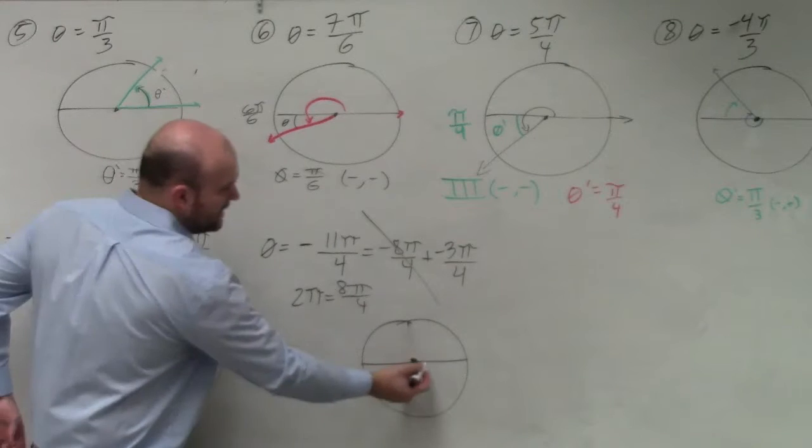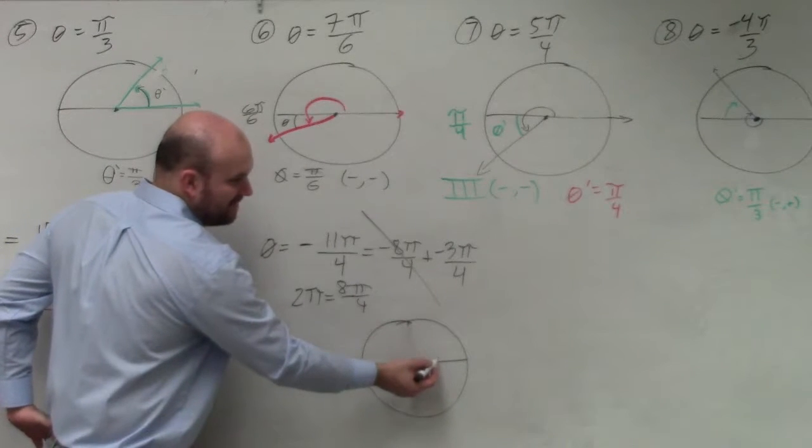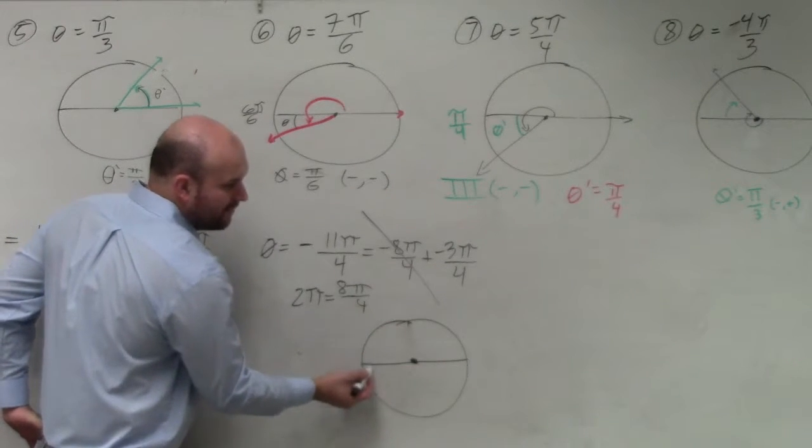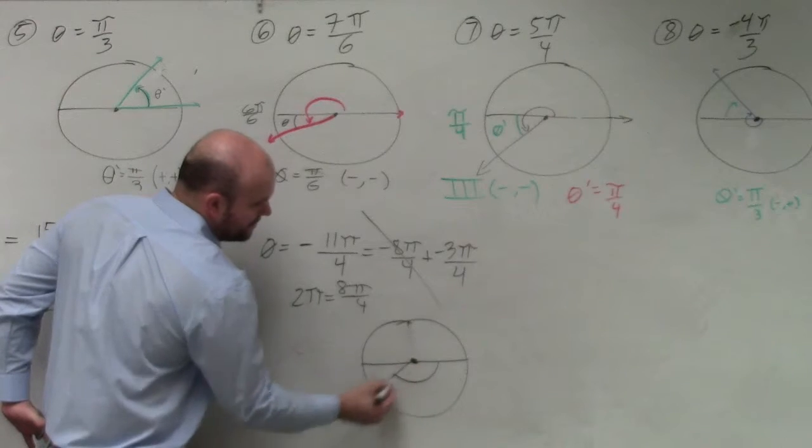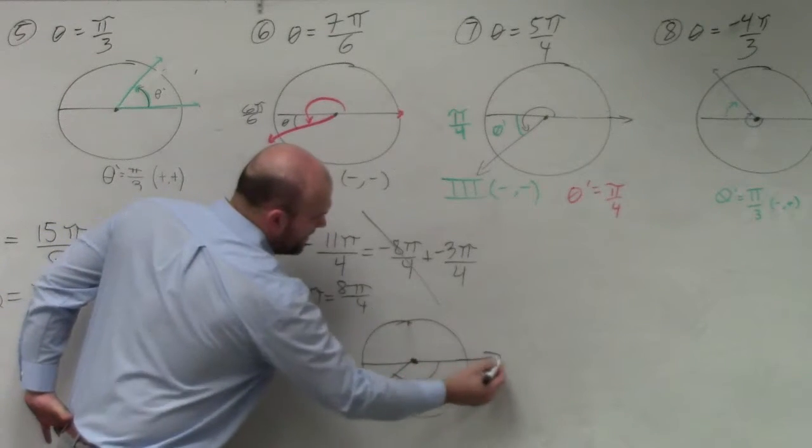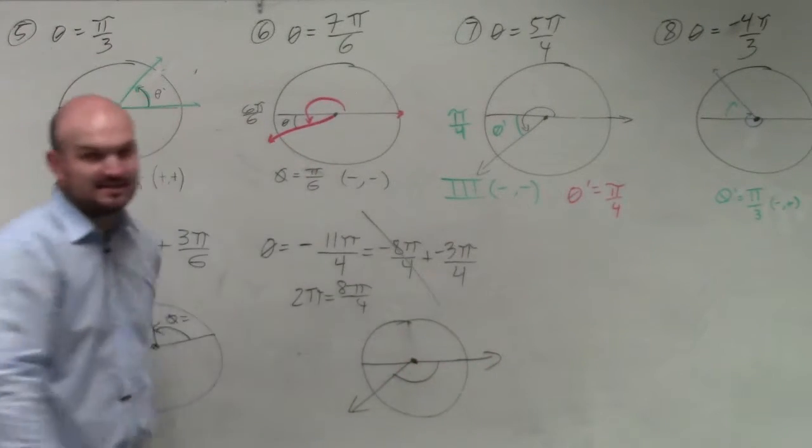So rather than going all the way around a circle for negative 8π and then going to negative 3π over 4, I can simply just go negative 3π over 4 and get my exact same angle.